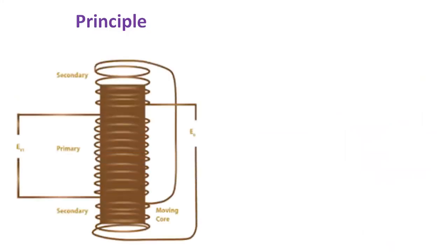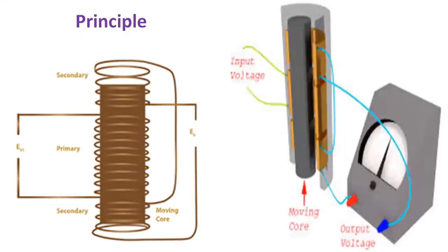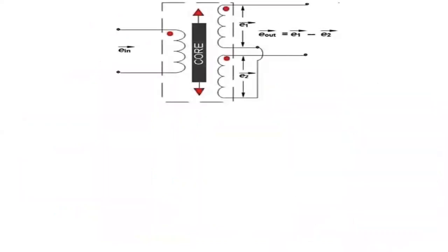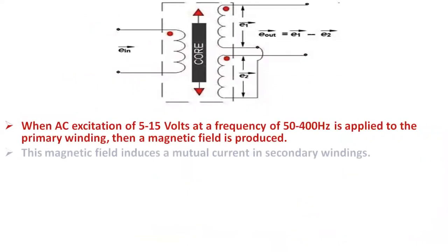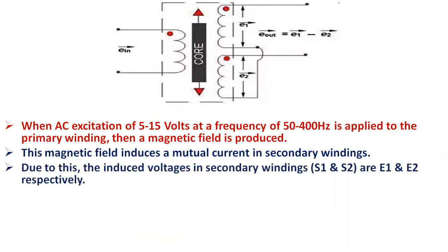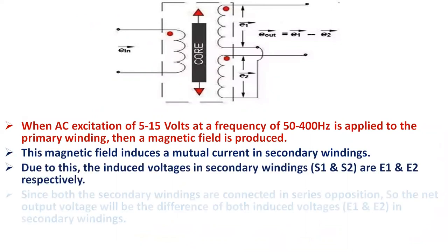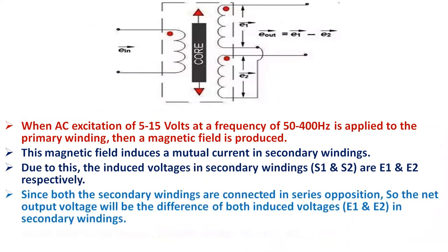The principle of LVDT is based on mutual induction principle. When AC excitation of 5 to 15 volts at a frequency of 50 to 400 Hertz is applied to the primary winding, then a magnetic field is produced. This magnetic field induces a mutual current in secondary windings.